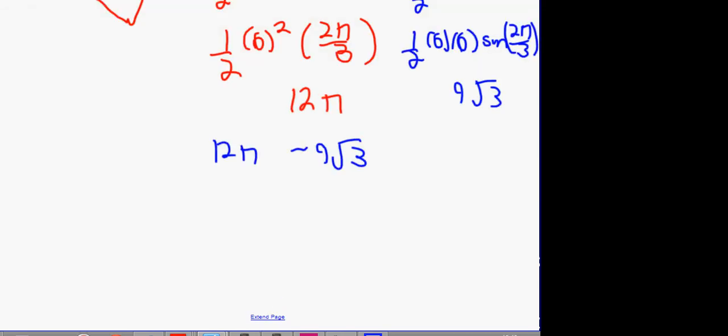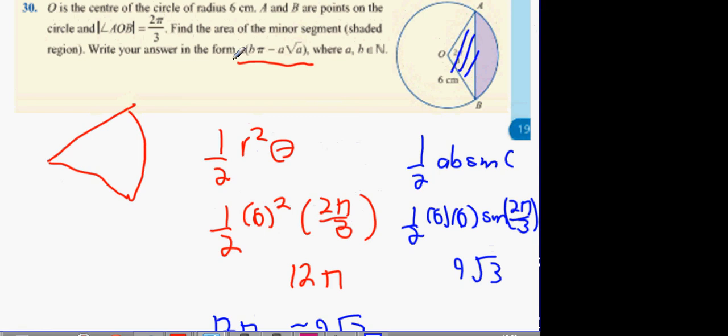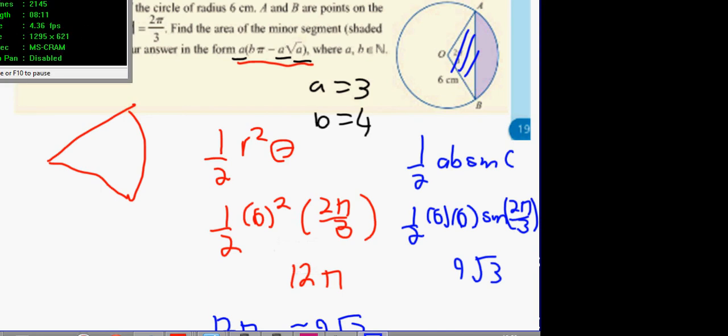Factorize. What can come out of all of them? 3. And then we're going to be left with 4π minus 3 root 3. Is that in the form we wanted? Does that mimic the answer up here? A is 3, B is 4. Okay guys, stop there.